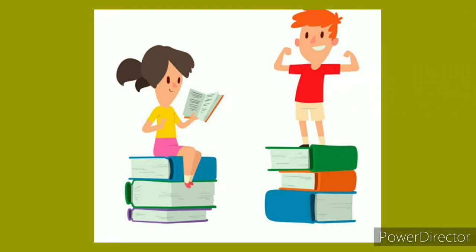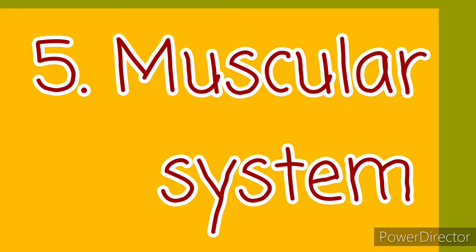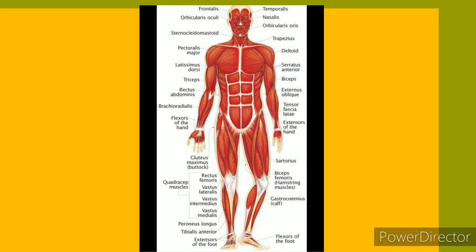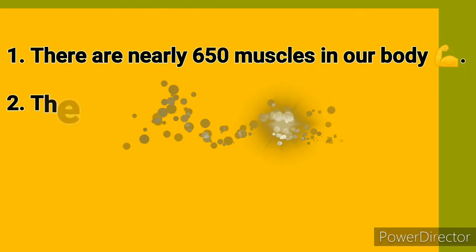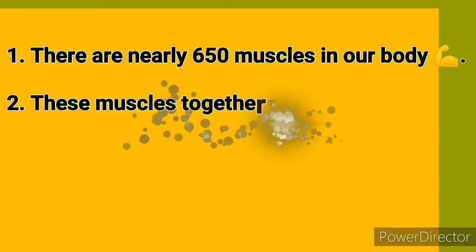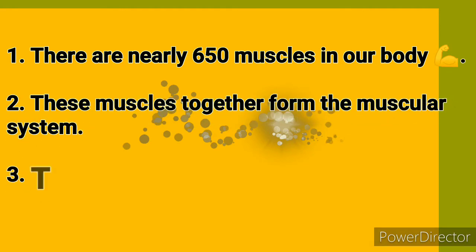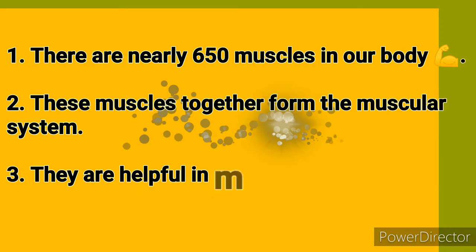Now we will learn about the fifth system: the muscular system. There are nearly 650 muscles in the human body. These muscles together form our muscular system. These muscles are attached to the bones and are helpful in making body movements.